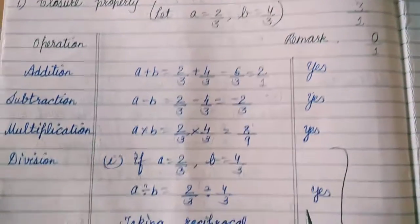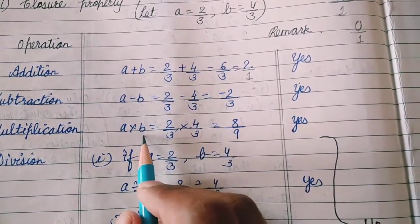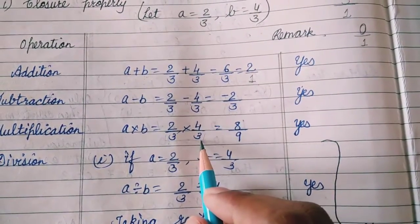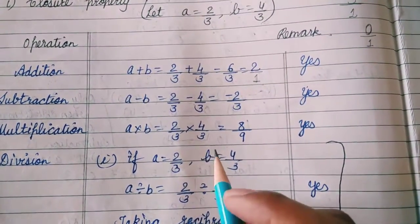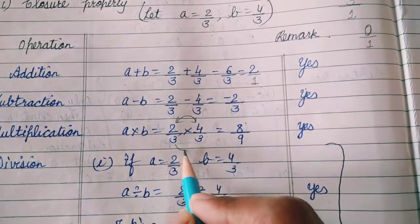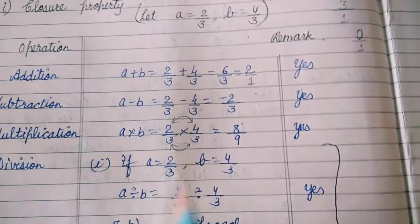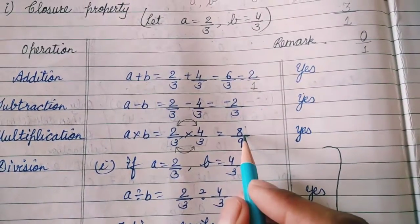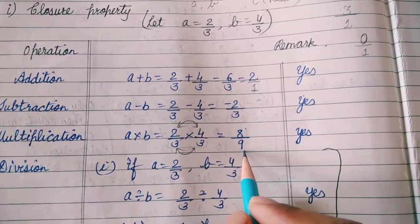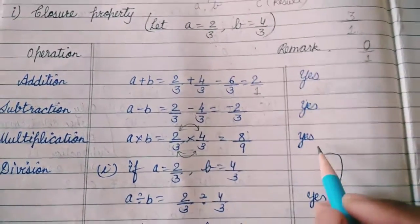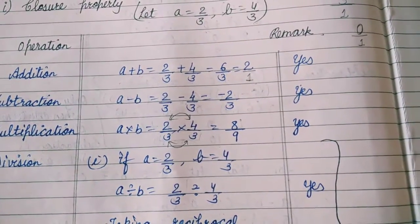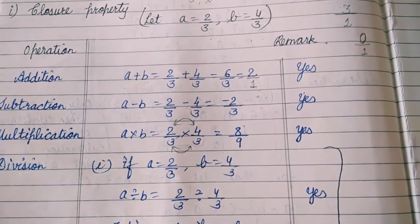Same for multiplication: we multiply A by B, which is 2 upon 3 multiplied by 4 upon 3. In multiplication we simply multiply numerator by numerator and denominator by denominator: 2 times 4 is 8, 3 times 3 is 9. The result 8 upon 9 is also a rational number. So under multiplication, our closure property is satisfying for rational numbers.